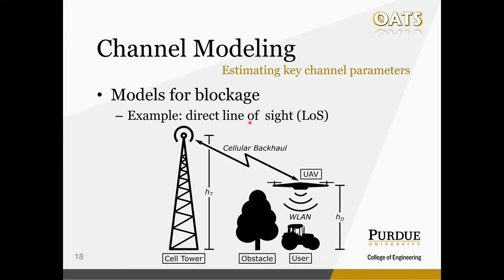Let's start with the direct line-of-sight model for finding blockages. As indicated by its name, it simply implies that if there are no obstacles between the transmitter and the receiver, then we will claim there is no blockage for the signal. For instance, in our illustration figure, the user is blocked from the cell tower because if we draw a line from the top of the cell tower to the user, there is a tree blocking that direct path. On the other hand, the UAV can see both the cell tower and the user directly, so there is no blockage for these two links. This is extremely intuitive and easy to implement in a simulator. However, electromagnetic signals are waves that may experience phenomena like reflection and diffraction, which are completely ignored here.